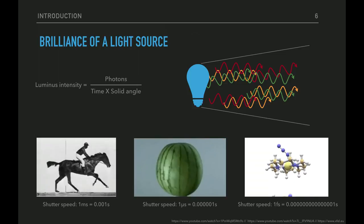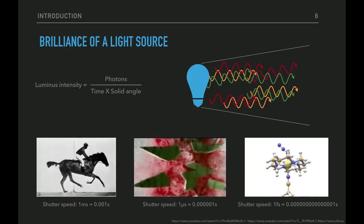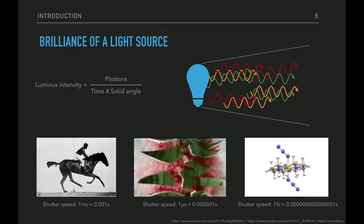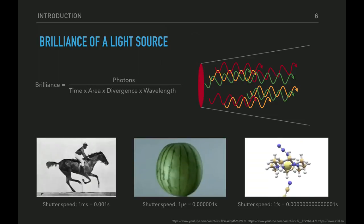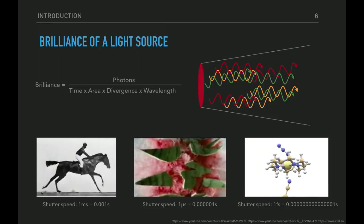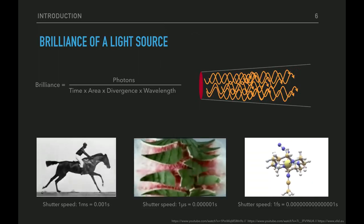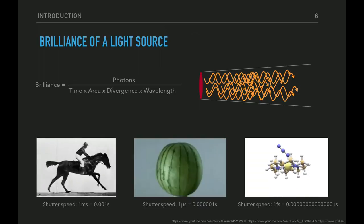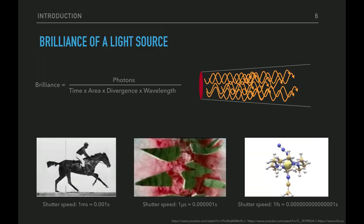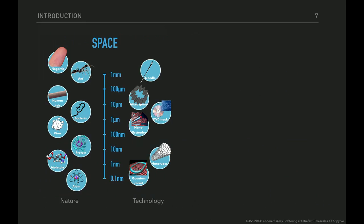Für eine normale Lampe gibt es diese Lumineszenzintensität, definiert als die Photonen, die pro Zeit- und Raumwinkel emittiert werden. Wir wollen hier eine Röntgenbeugung machen, das heißt wir brauchen kohärentes Licht. Hier haben wir die Brillanz von unserer Lichtquelle: Wir wollen so viele Photonen wie möglich in einem kleinen Raum mit einem schmalen Winkel und möglichst nur einer Wellenlänge. Die Brillanz ist wirklich unser Key-Feature.